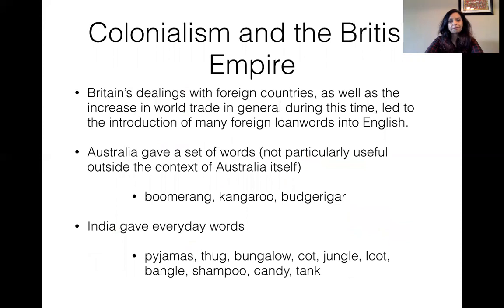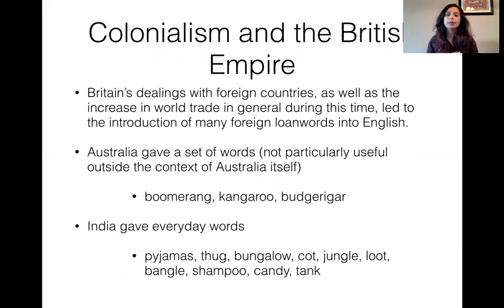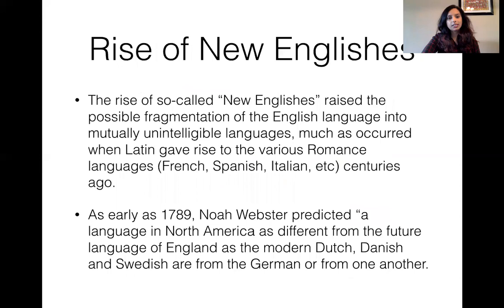What happened during colonization was that a lot of words were borrowed from the languages spoken in the colonized countries and adopted into English. From Australia, for example, from native Australian languages, you get words like 'boomerang' and 'kangaroo.' From Indian languages, you have 'pajamas,' 'bungalow,' 'jungle,' 'shampoo,' and more. During this era we also start to see the rise of new Englishes — not a standard variety of English, but Englishes spoken in smaller communities in these colonized regions.